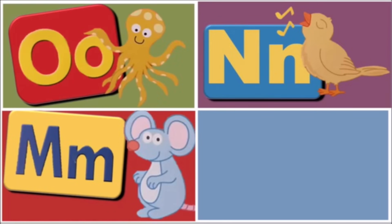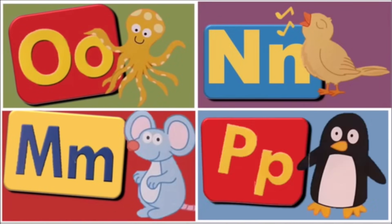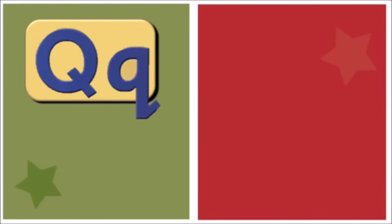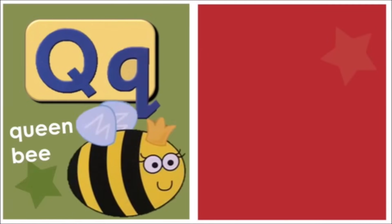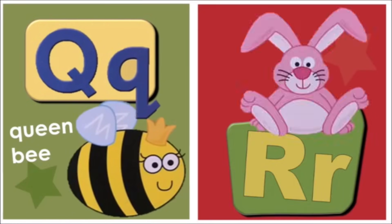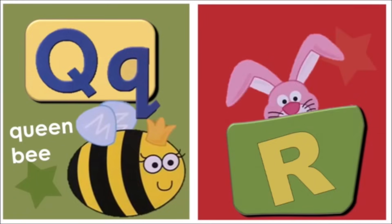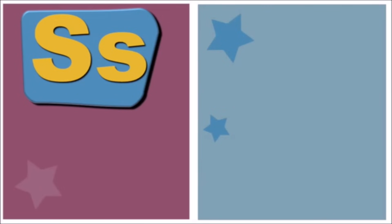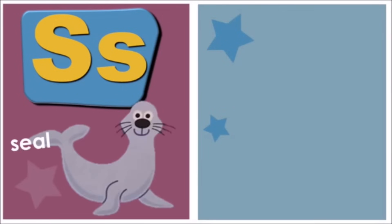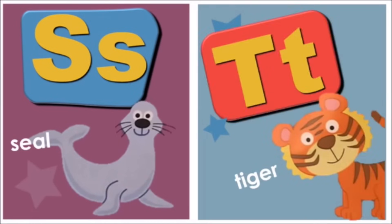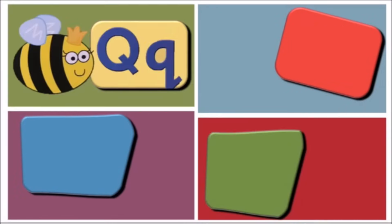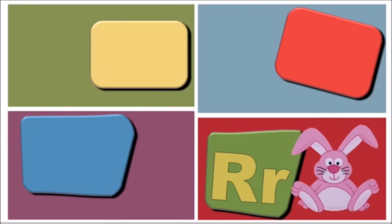Q for Queen Bee. R for Rabbit. S for Seal. T for Tiger. These are the words from the alphabets.